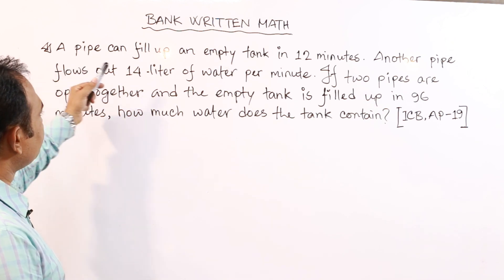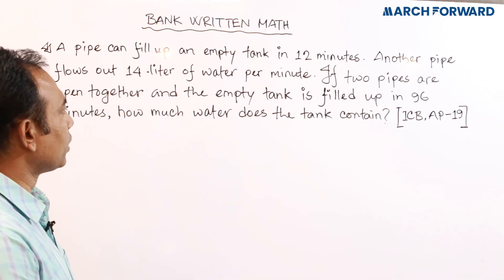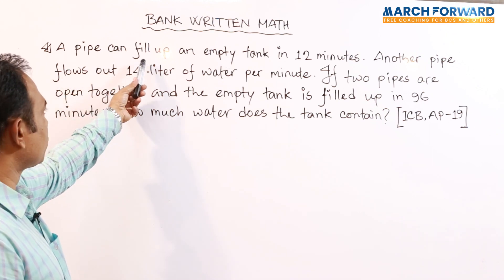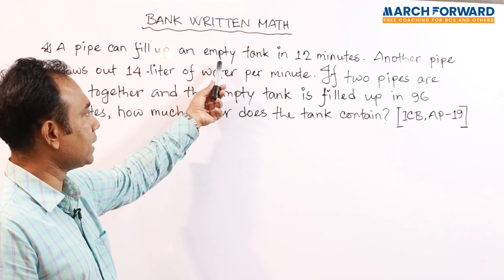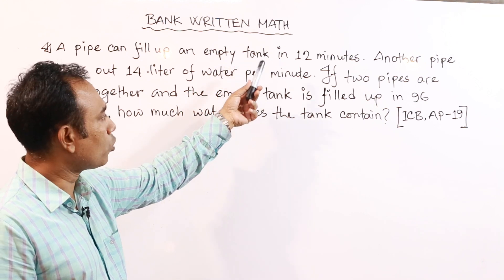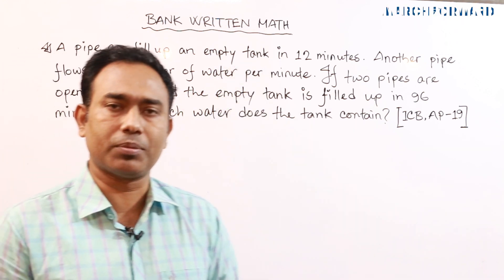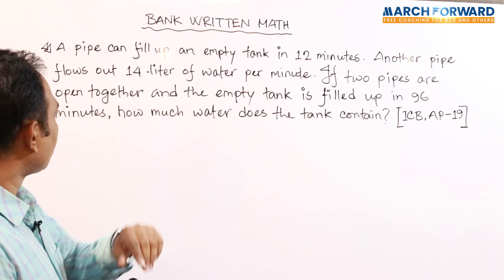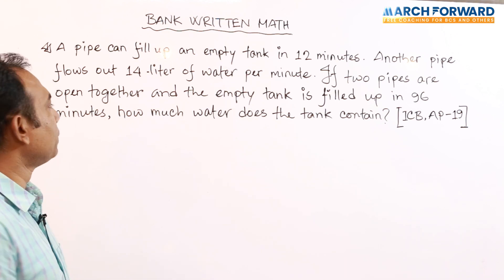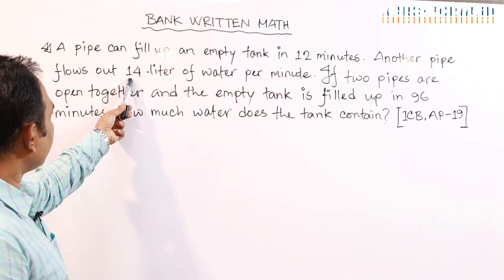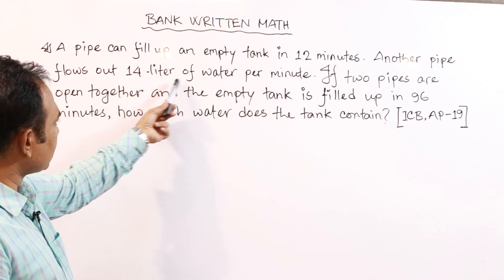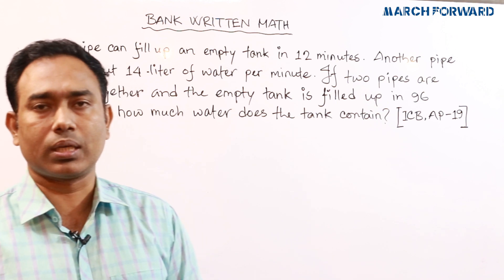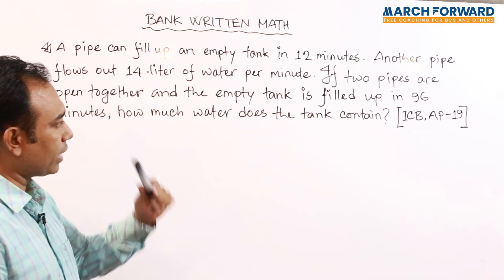A pipe can fill up an empty tank in 12 minutes. Another pipe flows out 14 liters of water per minute.